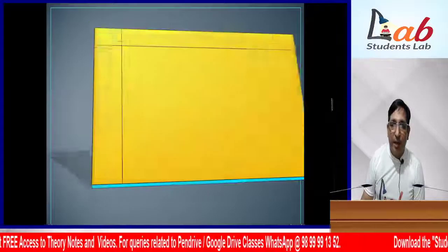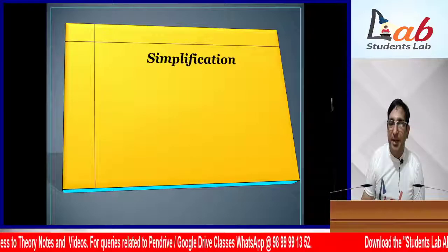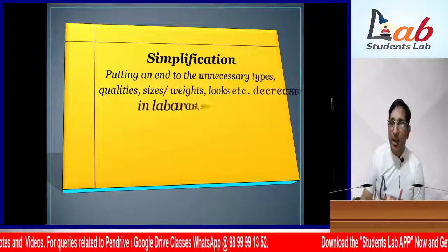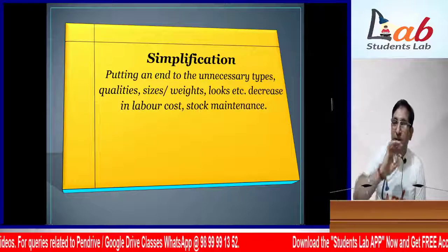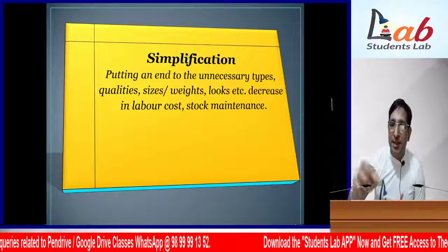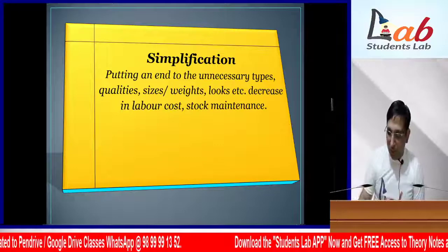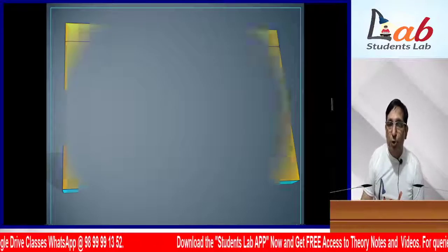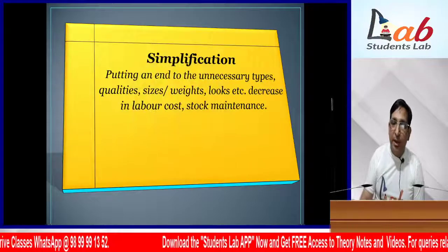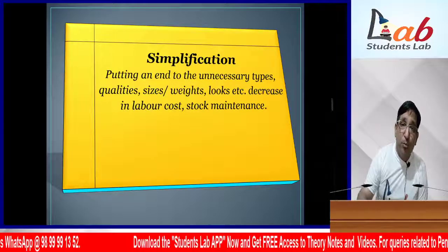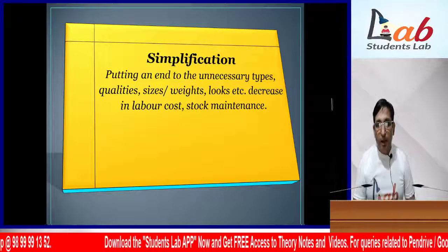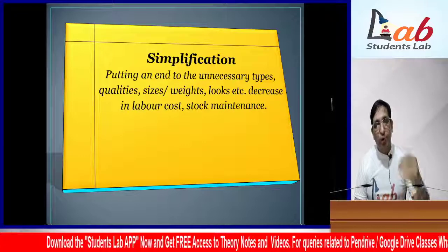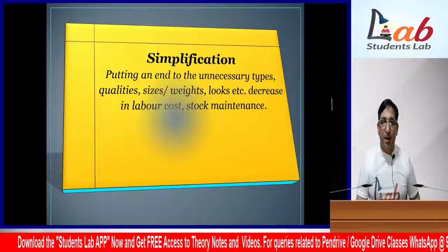Taylor also gave the Simplification technique. Big showrooms follow this. Remove unnecessary types, unnecessary quality, unnecessary sizes, weights, and looks. This reduces labor cost and stock maintenance. If you go to big showrooms, you will find only a limited number of types of goods - so they don't need to keep unnecessary stock and labor cost is reduced. This is called Simplification - to simplify.